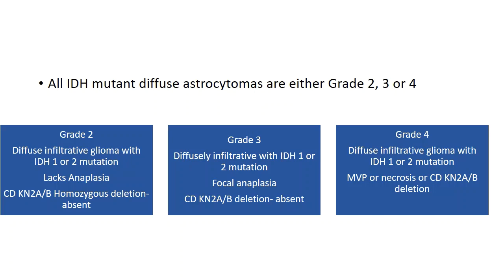All IDH mutant diffuse astrocytomas can be WHO grade 2, 3, or 4. WHO grade 2 is a diffuse infiltrative glioma with IDH1 or IDH2 mutation, lacking anaplasia and with absence of CDKN2A/2B homozygous deletion. Grade 3 IDH mutant diffuse astrocytoma shows IDH1/2 mutations with focal anaplasia. Presence of CDKN2A/2B homozygous deletion, necrosis, or microvascular proliferation upgrades the tumor to CNS-WHO grade 4 IDH mutant astrocytoma.